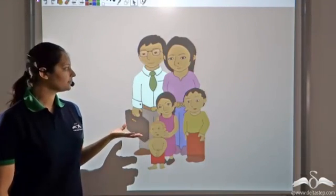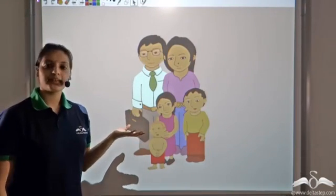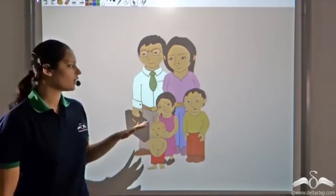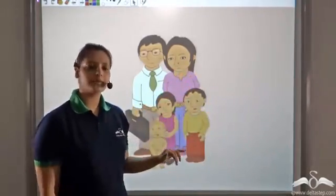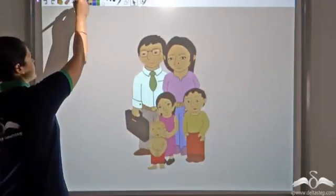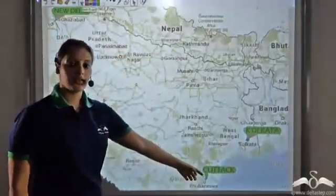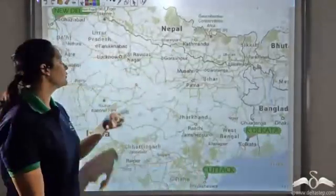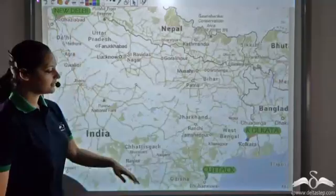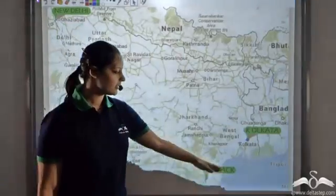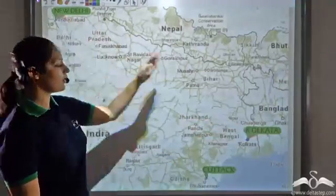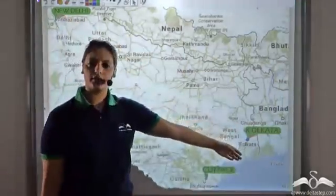This is the Chakrabarti family, and they stay in Kolkata. They were planning a family trip and were confused between two places: Katak and New Delhi. What they realized is that Katak is near Kolkata, whereas New Delhi is far from Kolkata.